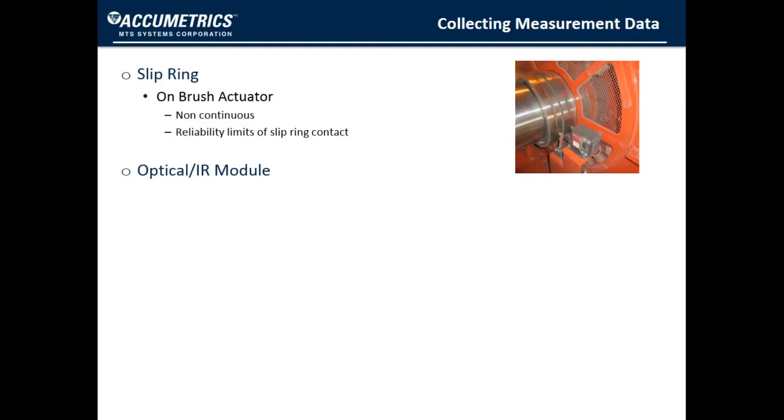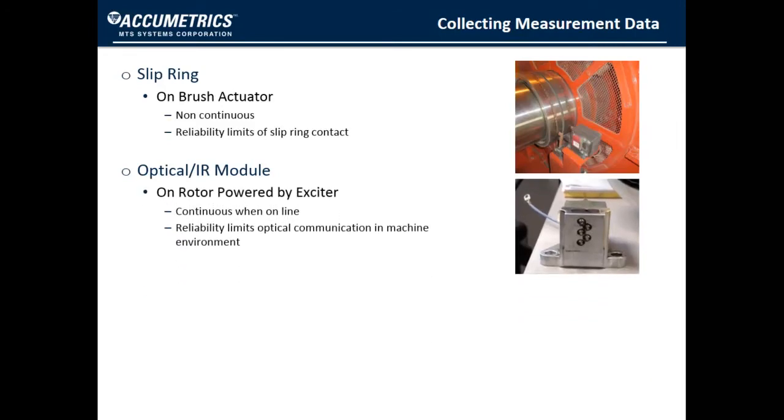Another method is an optical or infrared module that is mounted on the rotor. This is an electronic circuit that is powered when excitation comes on. So it is continuous when the unit is online, but it is not operational before you turn excitation on. Its limitation is the reliability of the optical communication.